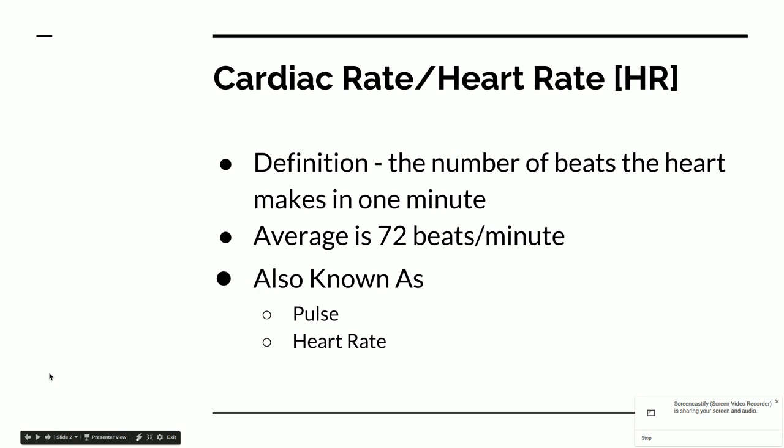The first thing we want to talk about is cardiac rate, or heart rate, represented by HR. The definition is the number of beats the heart makes in one minute. The average number is about 72 beats per minute. Those who are in better shape have lower numbers; those who are out of shape might have higher numbers. It's based on age, weight, and exercise.